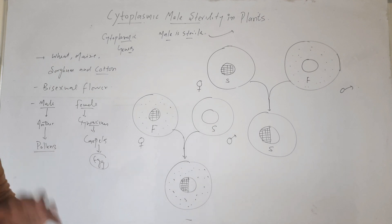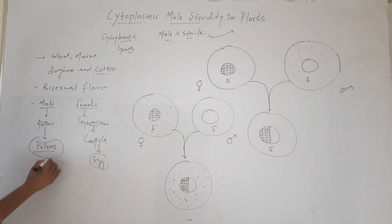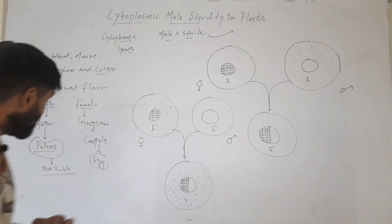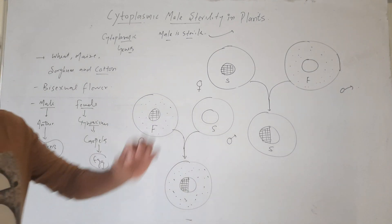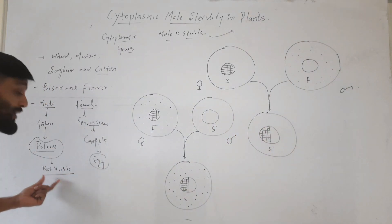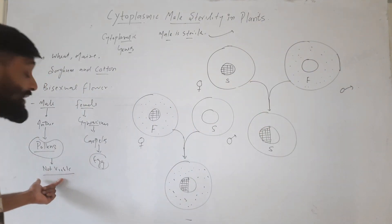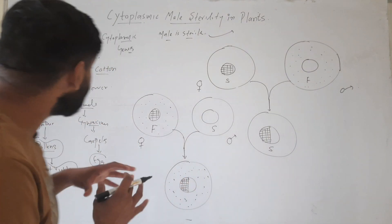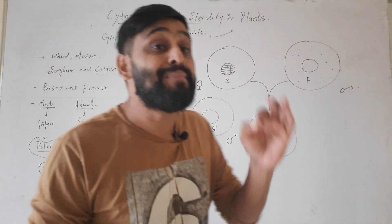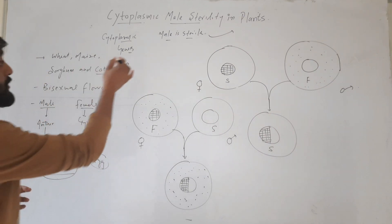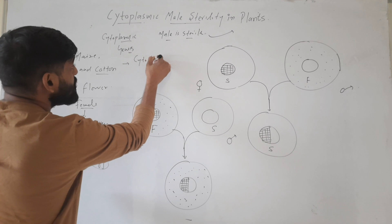So in these bisexual flowers, when these pollens are not viable, then this condition is called male sterility. It means this pollen cannot pollinate the female reproductive part — it cannot pollinate the egg, it cannot fertilize with the egg. So if this pollen is not viable in a bisexual flower, then it is called a male sterile flower. And this occurs due to cytoplasmic genes.